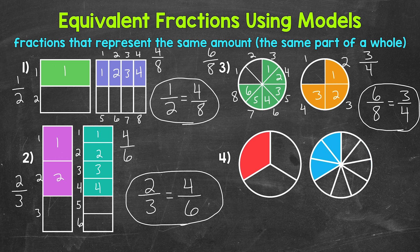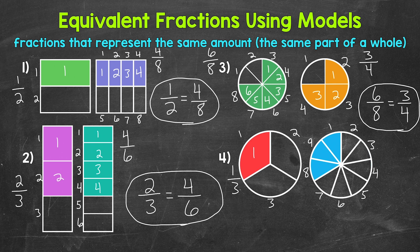Lastly, let's move on to number four and write out the equivalent fractions being represented here. The circle on the left has been divided into three equal parts, so three is the denominator, and one part has been shaded in, so one is the numerator. That circle is representing one third. For the circle on the right, it's been divided into nine equal parts, so nine is the denominator. Three parts have been shaded in, so three is our numerator. That circle represents three ninths. So one third and three ninths are equivalent.